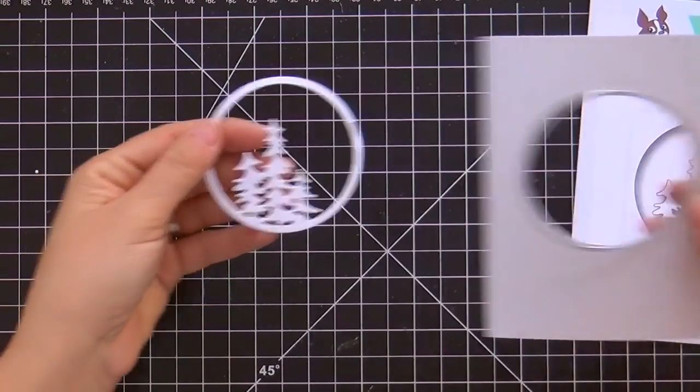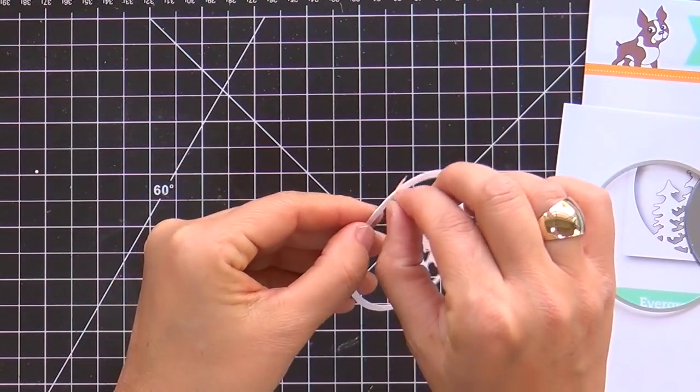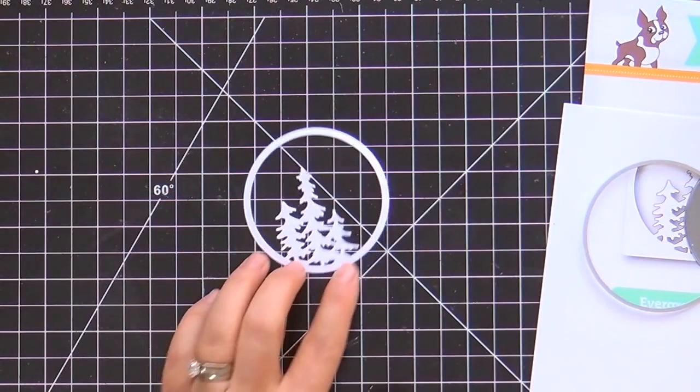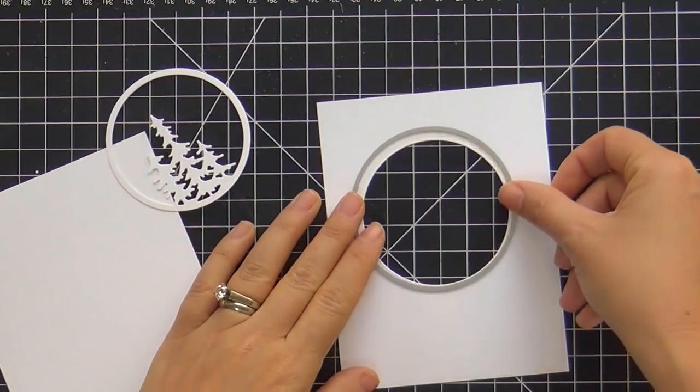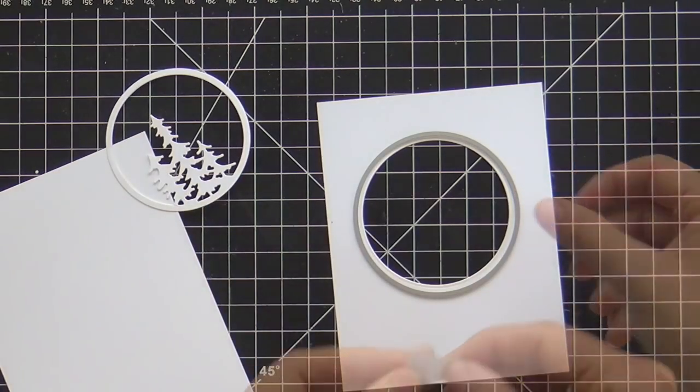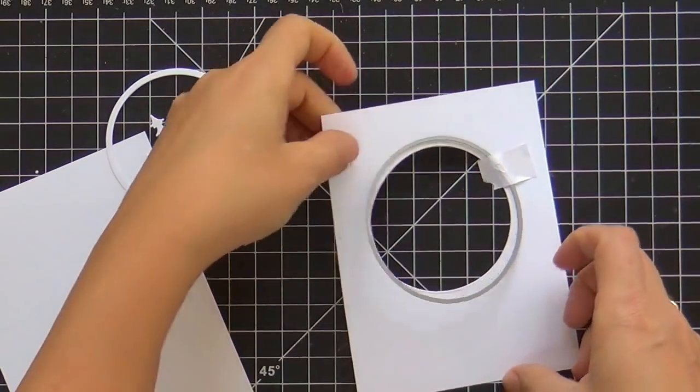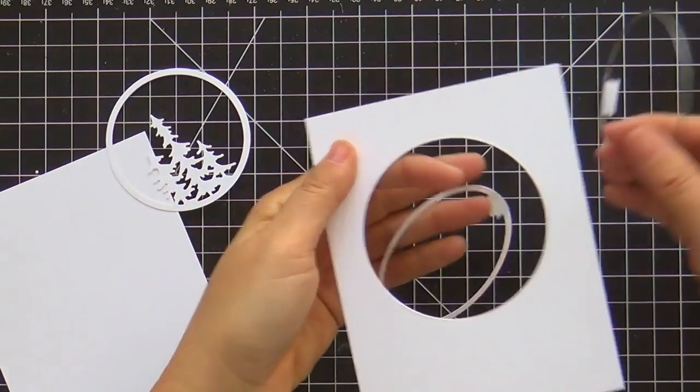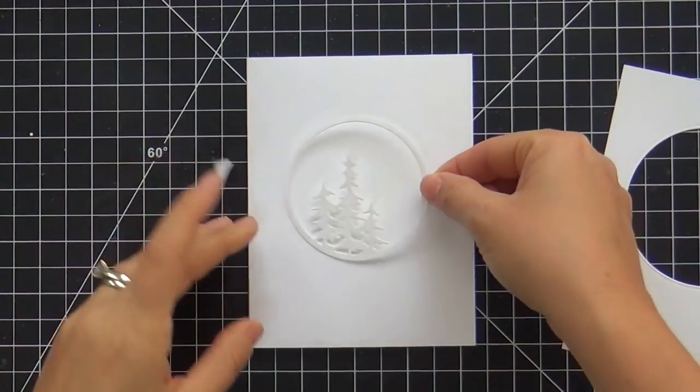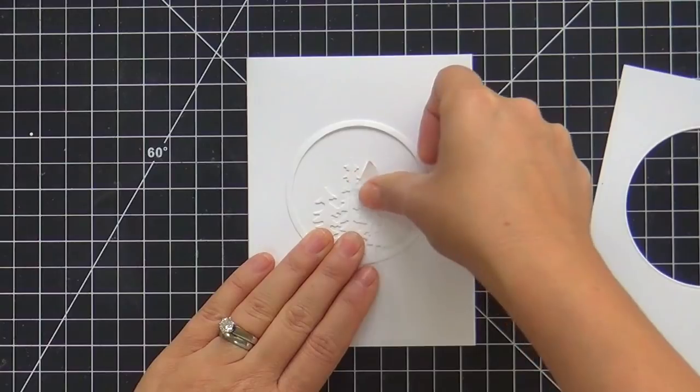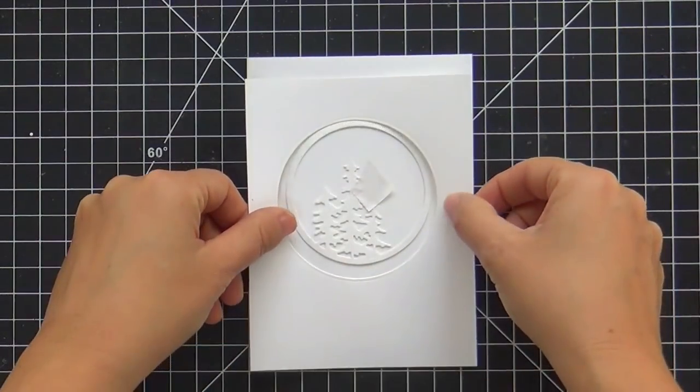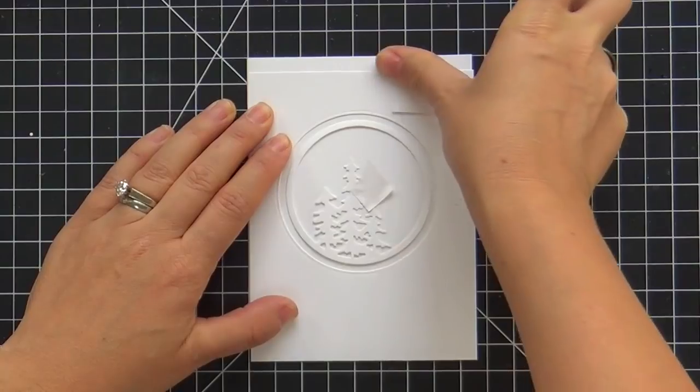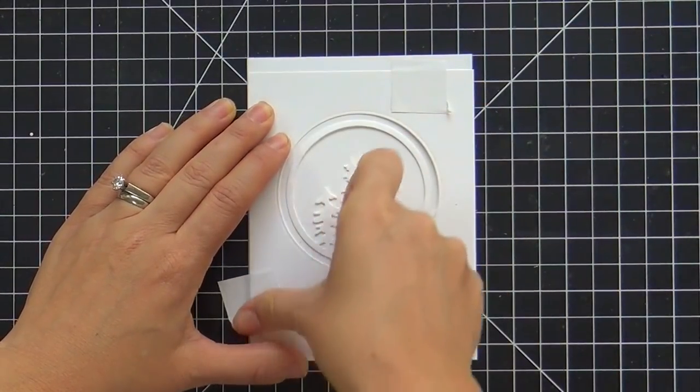So I almost like turn it into a frame if you will, and then I'm going to take that panel that's left over that was with the circle and I'm going to take a larger circle, just one step larger and just die cut. This is going to just be used as a mask. I'm going to do just a little bit of ink blending for the background and I wanted my ink blending to kind of frame the evergreen circle so I wanted it to be just slightly larger.